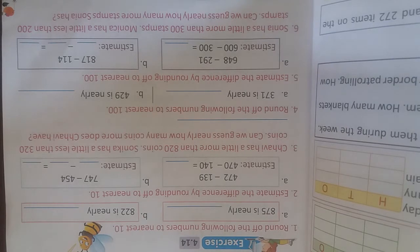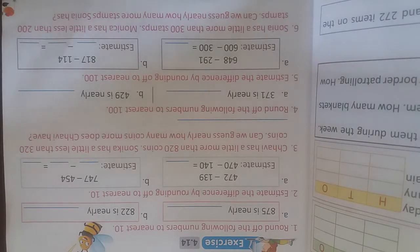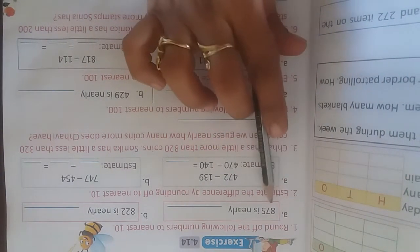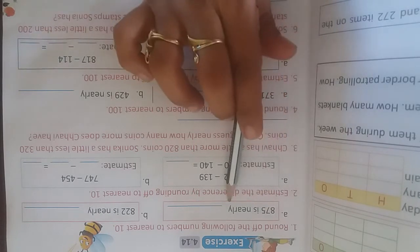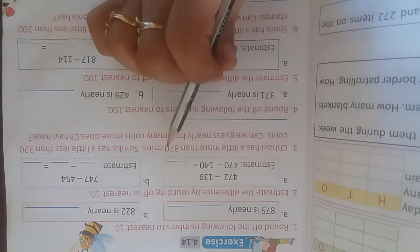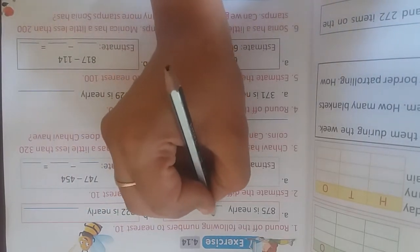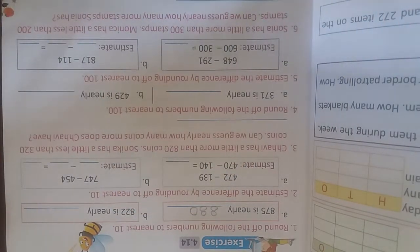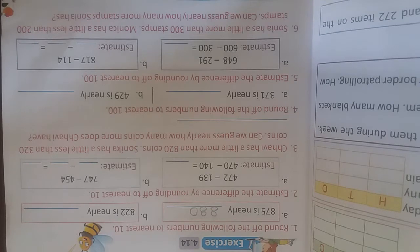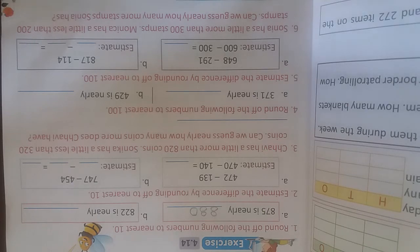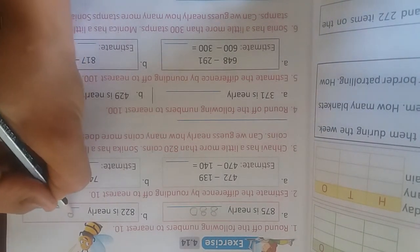Let's try to solve the first question: round off the following numbers to the nearest 10. The first number is 875 — the nearest will be 880. The second number is 822 — 22 is nearest to 20, not 30, so it will be 820.